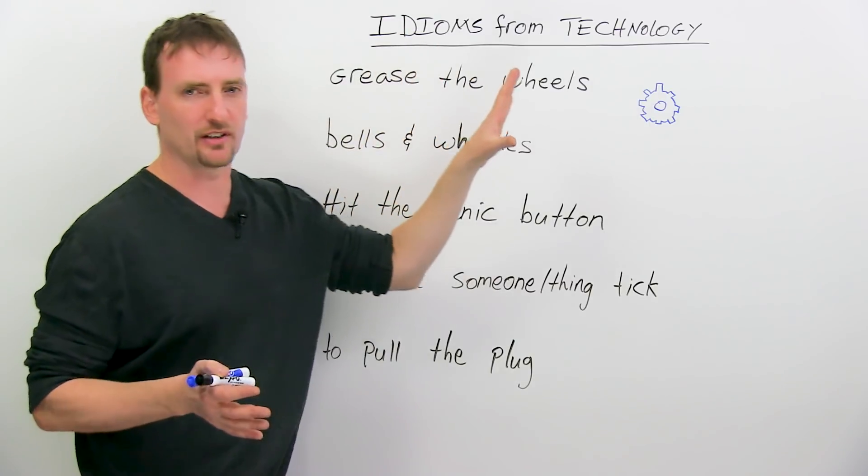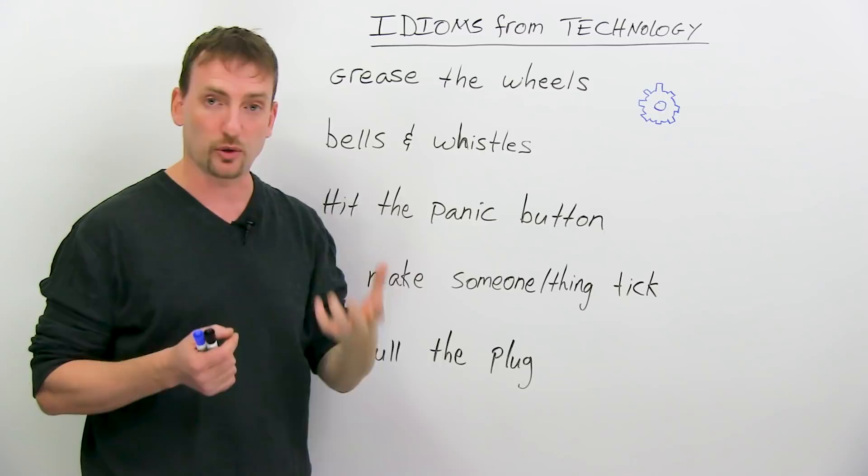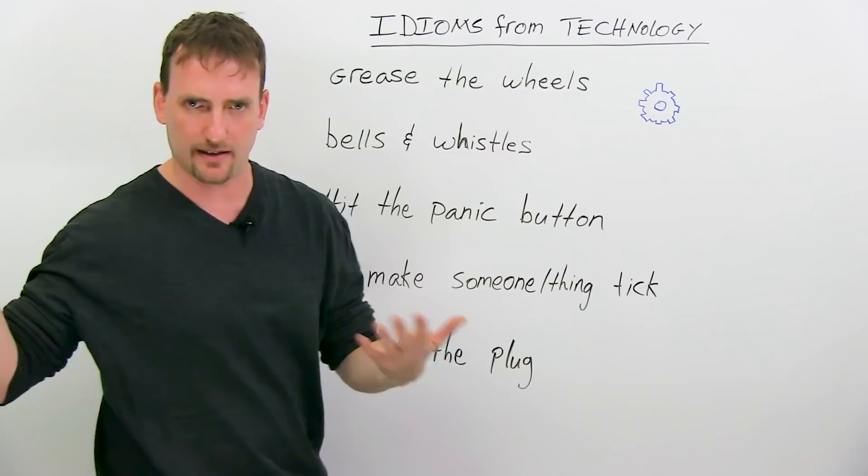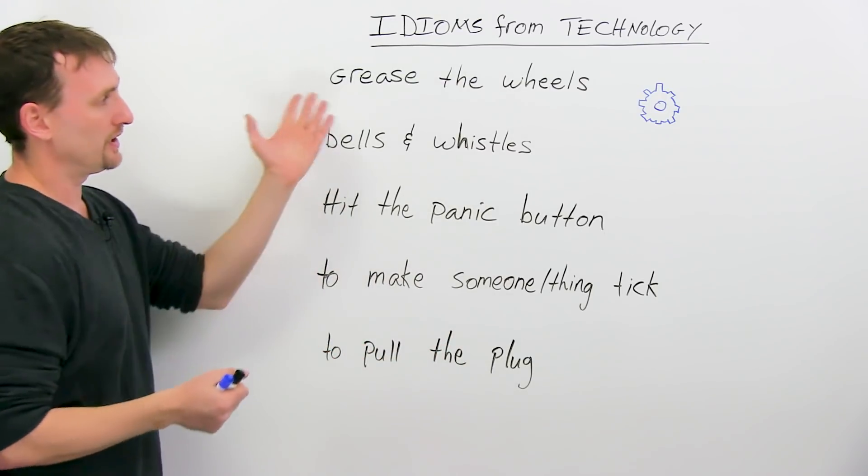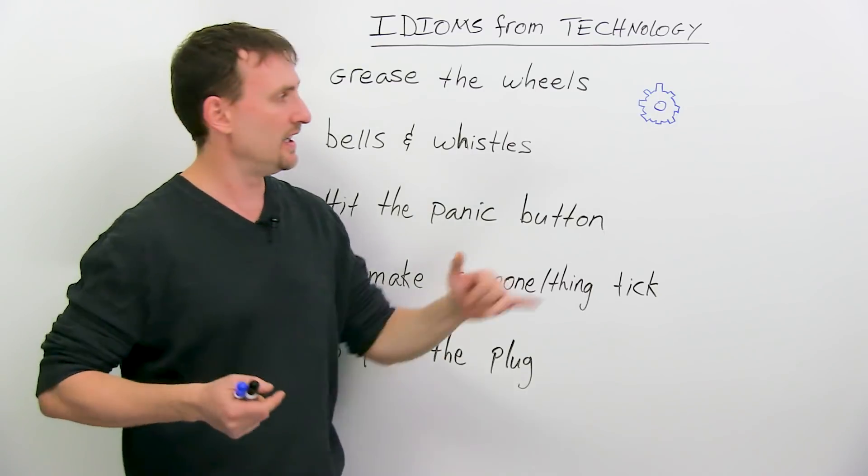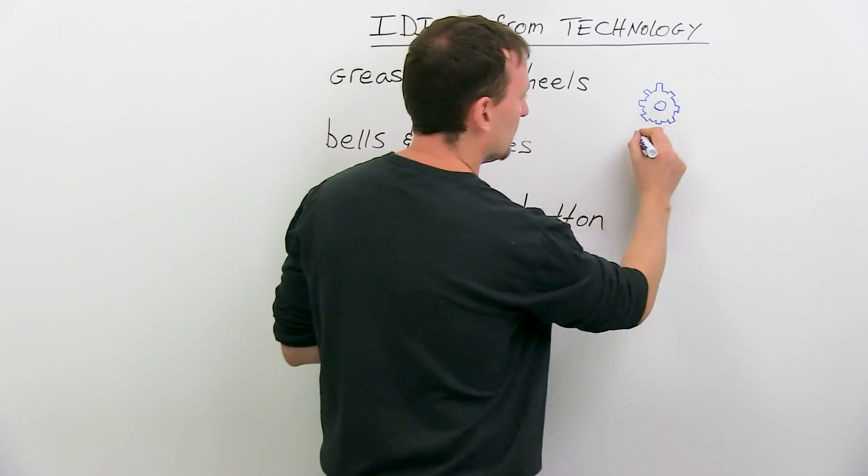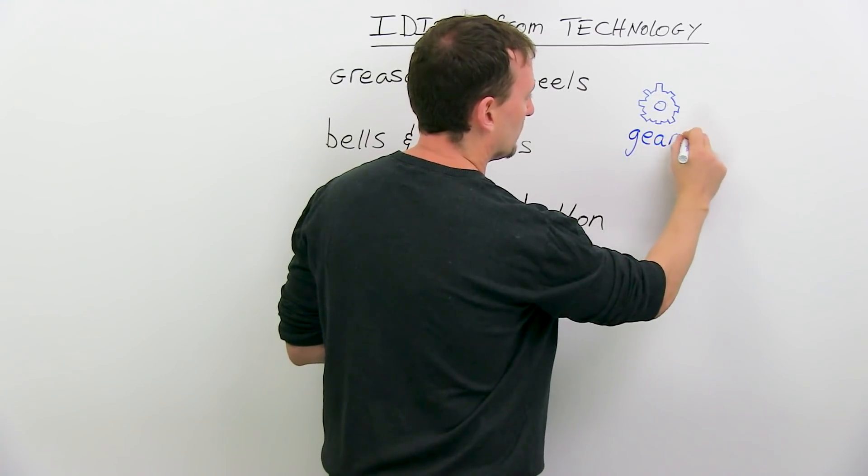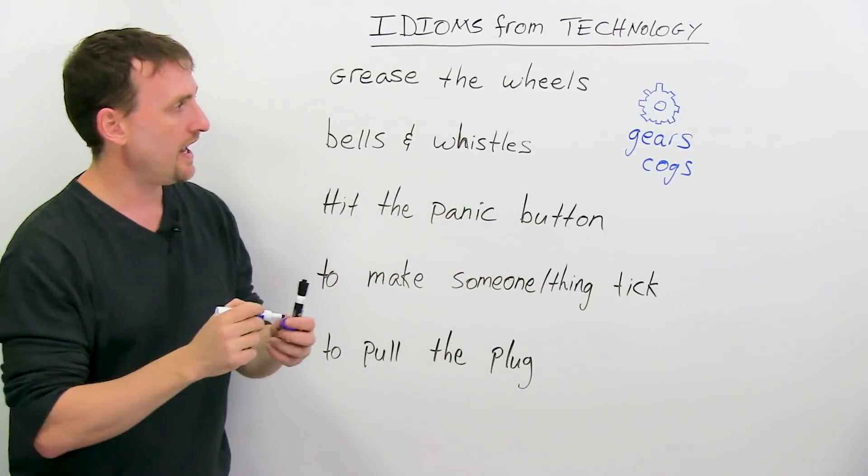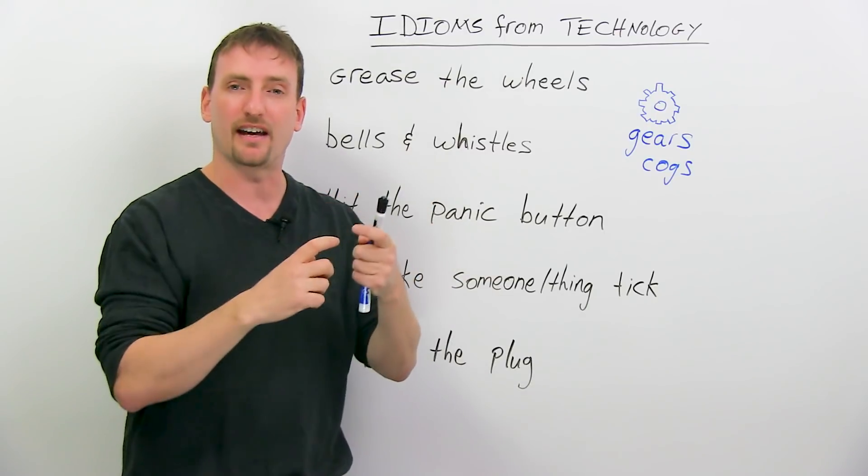All of these come from technology because they started about an actual technological tool or piece of equipment or innovation, and we took this expression and we applied it to other things. We're going to start with grease the wheels. If you think about machines, they have these kinds of wheels. They're called gears, or sometimes they're called cogs. A cog in the machine. And a machine might have many of these wheels, and the wheels sort of work together.